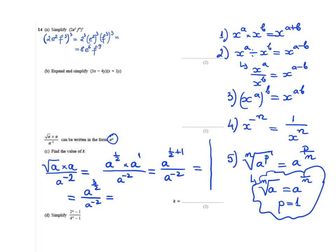Now I apply rule number 2. This is a^(3/2 - (-2)), which equals a^(3/2 + 2), so a^(7/2). Your k will be 7/2 or 3.5.